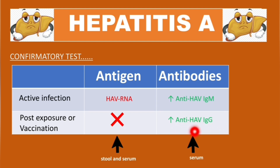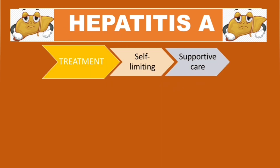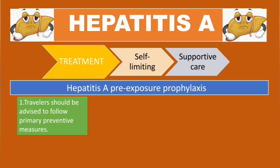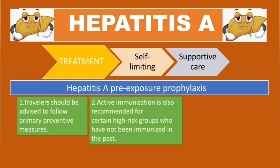Treatment of acute viral hepatitis A is usually self-limiting, so only supportive care is necessary. For pre-exposure prophylaxis, rule one: travelers should follow primary preventive measures, including washing hands and maintaining food and water safety. Rule two: active immunization is recommended for certain high-risk groups who have not been previously immunized.